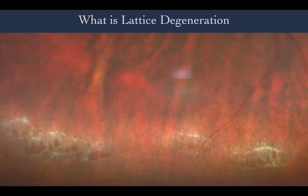The cause of lattice degeneration is not known with certainty so far. Some of the hypotheses are developmental anomalies of the internal limiting membrane, embryonic anastomosis or malformation. Other hypotheses include retinal ischemia or some changes in the vitreous that may induce retinal degeneration.